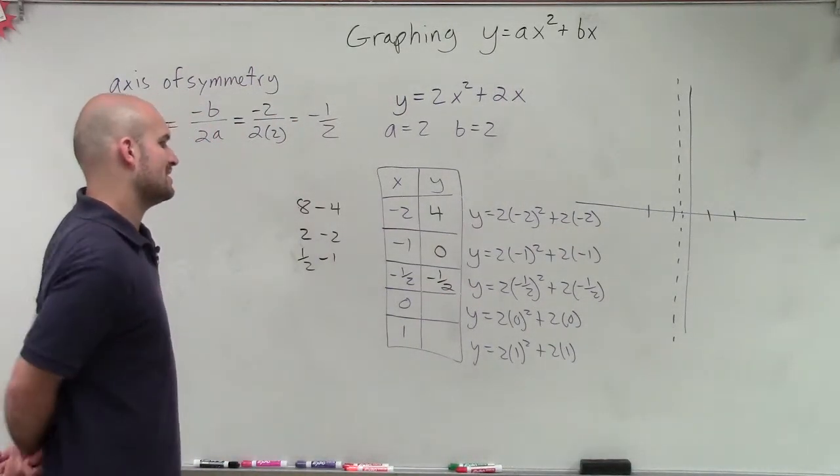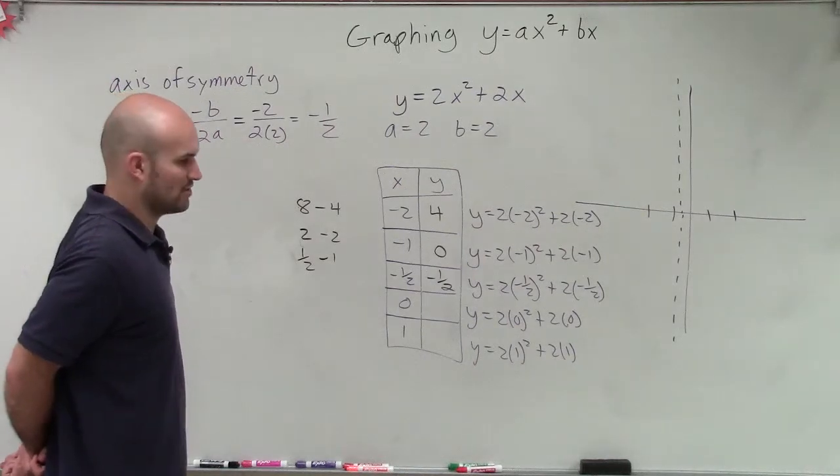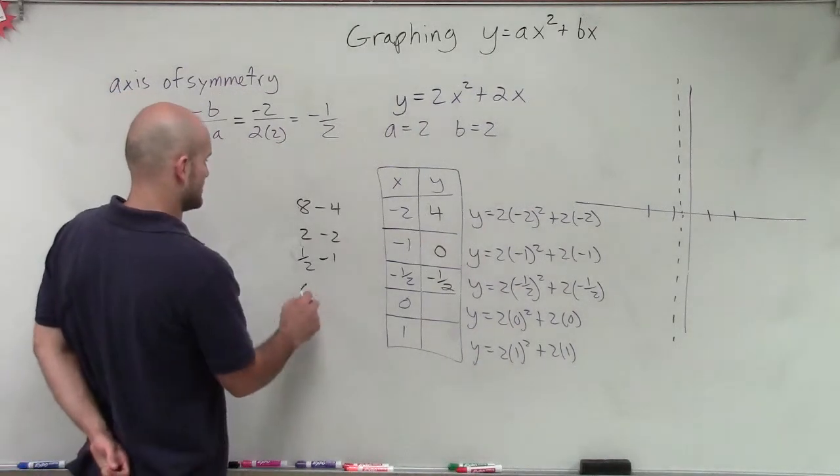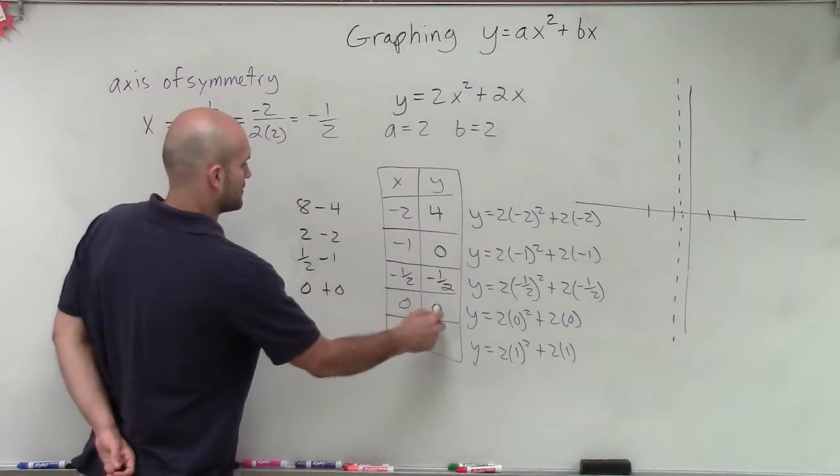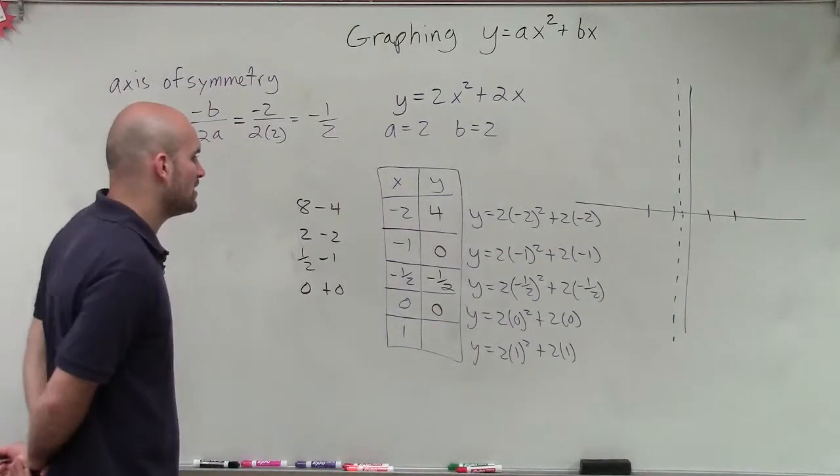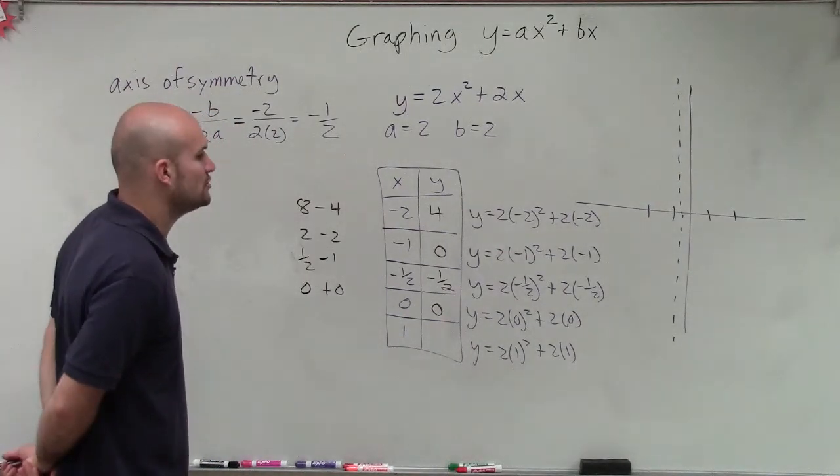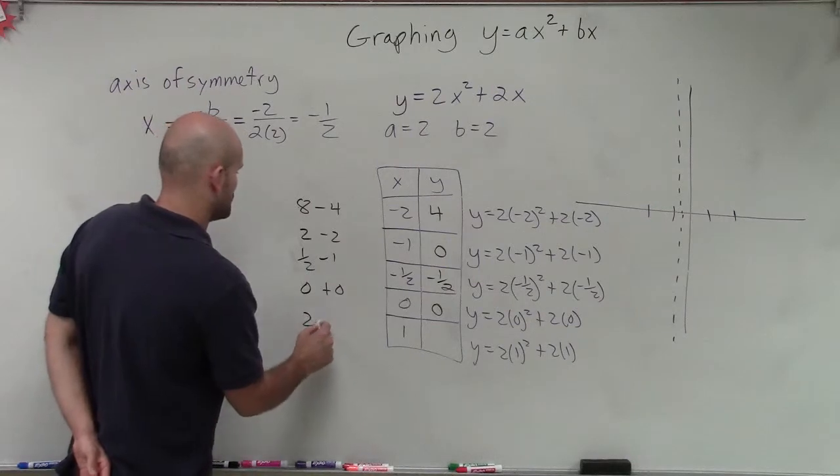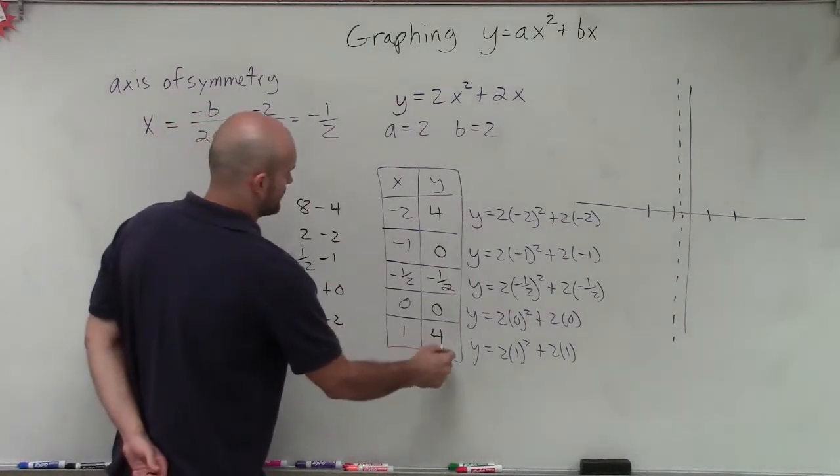Then I have 0. 0 squared is 0 times 2 is 0 plus 2 times 0 is 0. And then I have 1 squared is 1 times 2 is 2, plus 2 is going to be 2 plus 2, which equals 4.